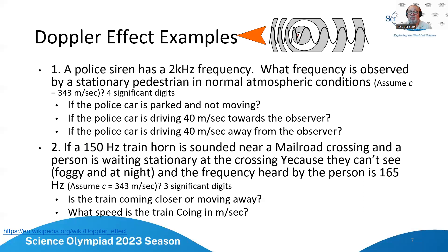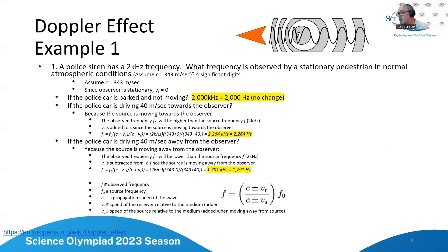Question two is if a 150 hertz train horn is sounded near a railroad crossing and a person is waiting stationary, in other words they're not moving, at the crossing because they can't see, it's foggy and at night, and the frequency heard by the person is 165 hertz. So if the train is moving, is the train coming closer or moving away? And what speed is the train going in meters per second? Let's look at this.